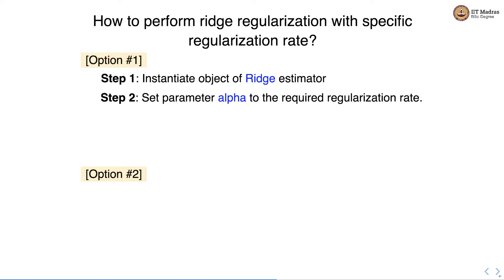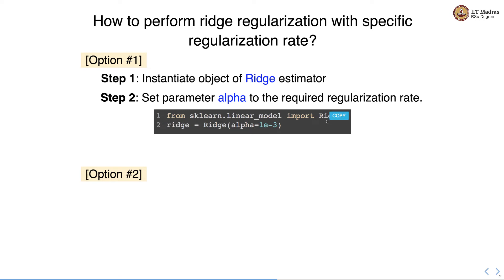Here is a word of caution: we have used alpha as a learning rate in the Machine Learning Techniques course, but in sklearn alpha is used as a regularization parameter. In the Techniques course we use lambda as a regularization rate, so this can be a source of confusion. Be careful when you use sklearn — alpha corresponds to the regularization rate when used as a parameter inside the Ridge estimator.